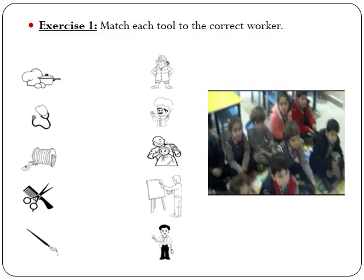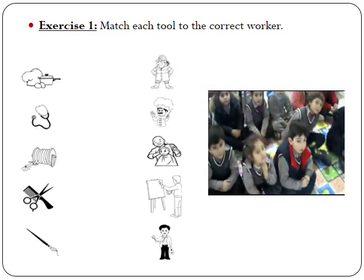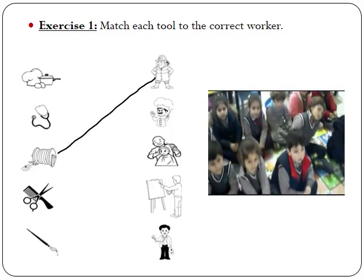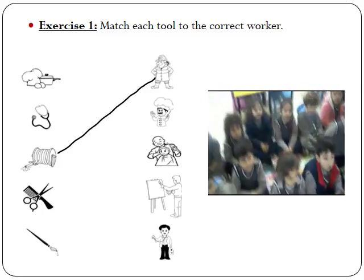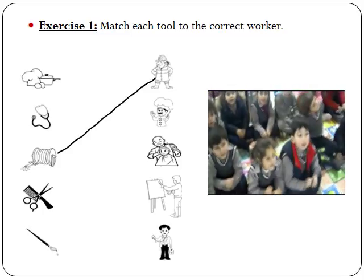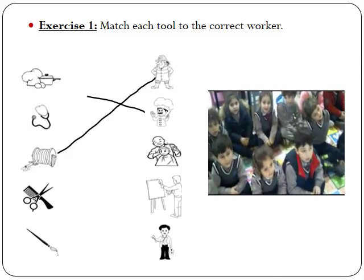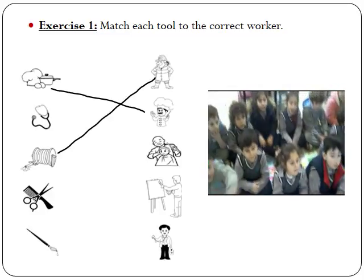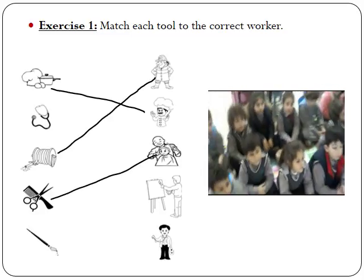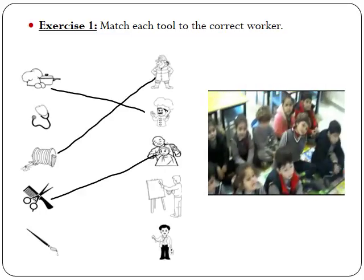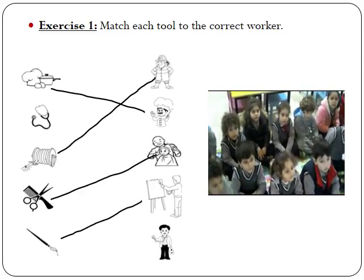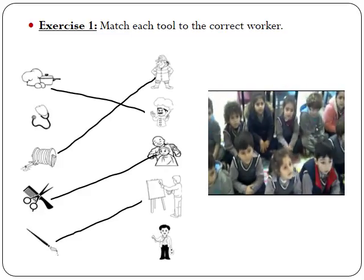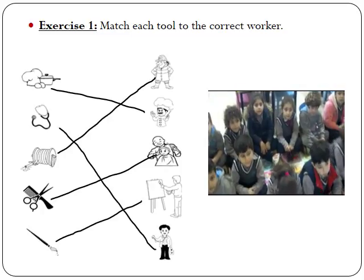Let's begin with the first one. What does the firefighter use? Hose. What about the cook? Cook uses scissors, egg, and thumb. Excellent. What about the barber? Scissor and comb. Painter? Paintbrush. What about the last one? The doctor uses the stethoscope. Very good.